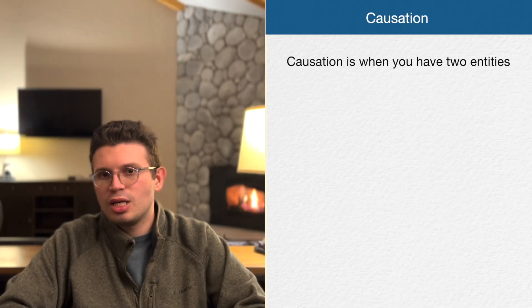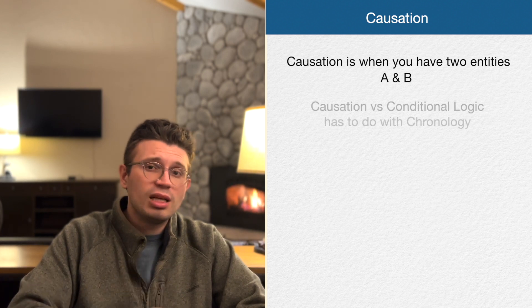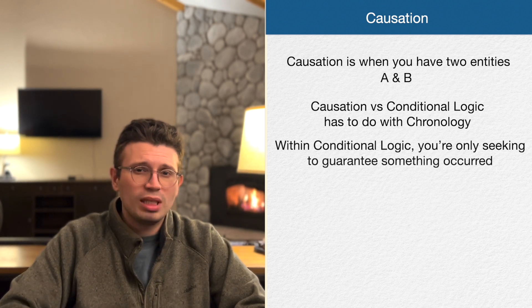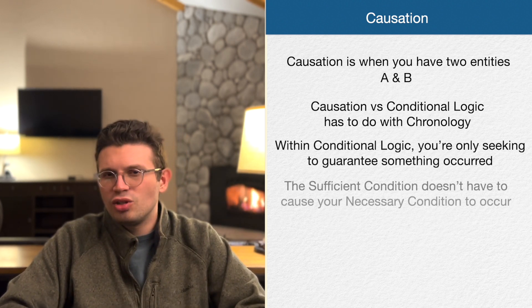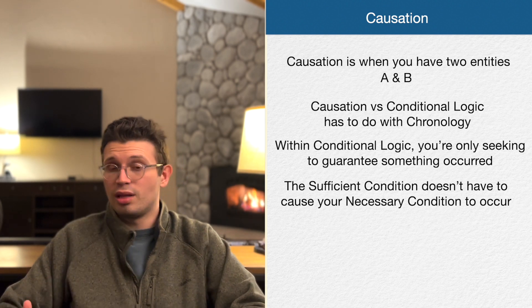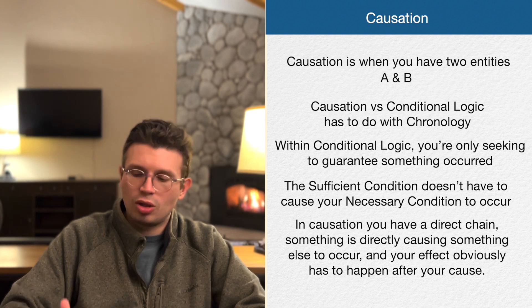Causation is another core skill typically found in must be true questions. We covered causation and the difference between causation and conditional logic in an earlier lesson. Essentially, causation is when you have two entities, A and B, and one causes the other to occur. The big difference from conditional logic has to do with chronology: within conditional logic you're only seeking to guarantee something occurred, but in causation you have a direct chain — something is directly causing something else to occur, and the effect obviously has to happen after the cause.